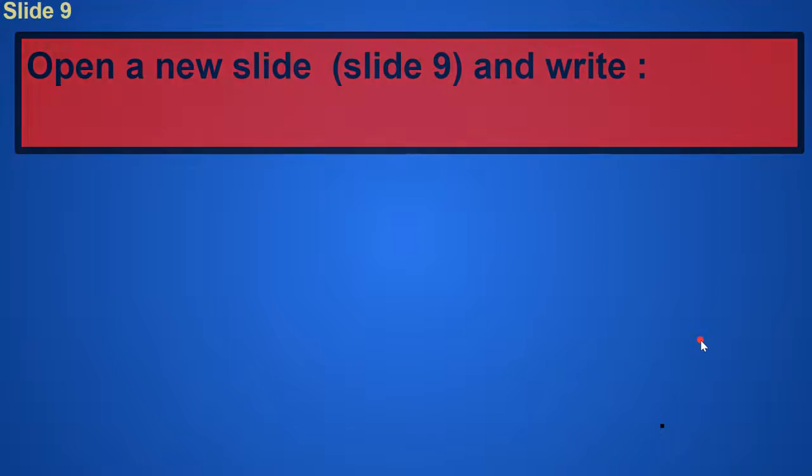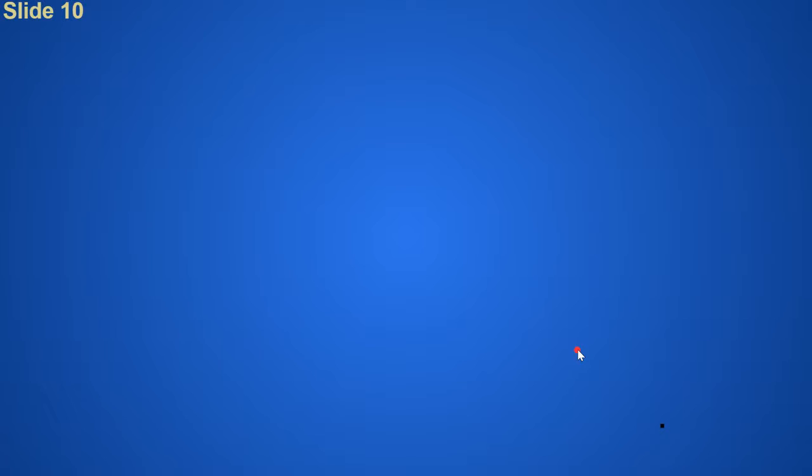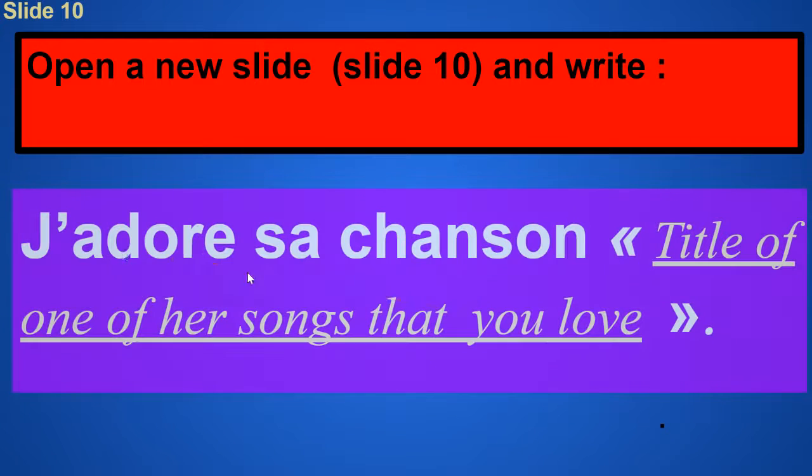Slide nine was Ma chanteuse préférée. Make sure you put all those accents and the extra E. S'appelle and the name of your favorite female singer. Make sure you put a period at the end. And the name of the singers need to be capitalized as well. Slide number ten was the song of that female singer that you like. J'adore sa chanson, open quotation mark, the title of one of her songs that you love, close quotation marks, period.